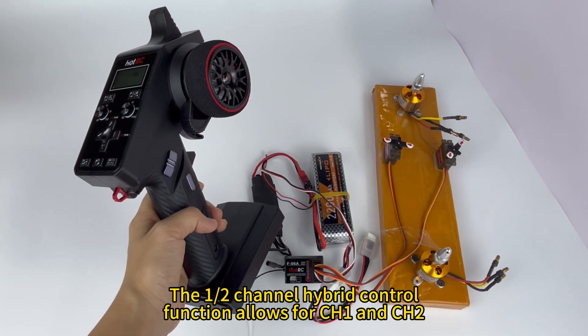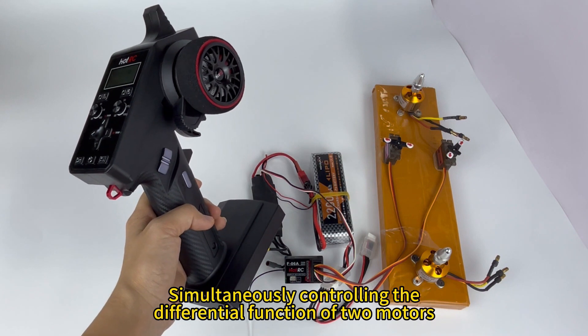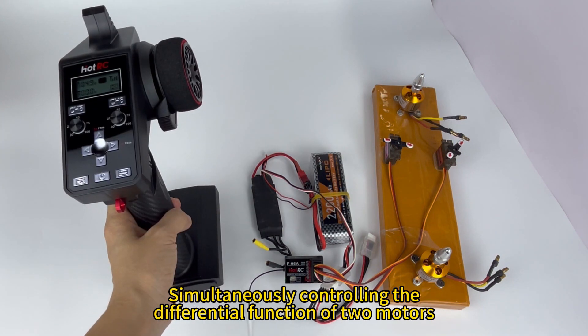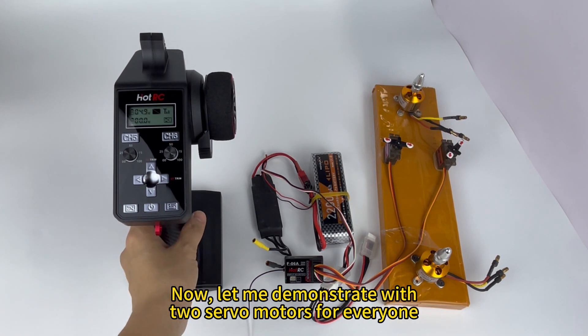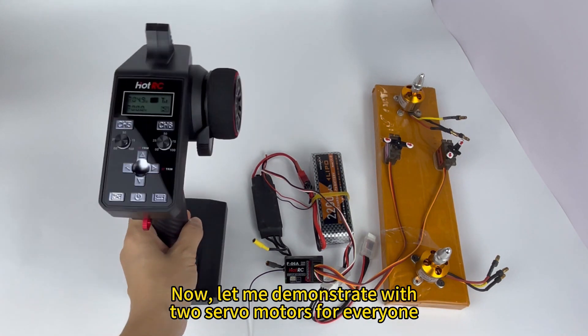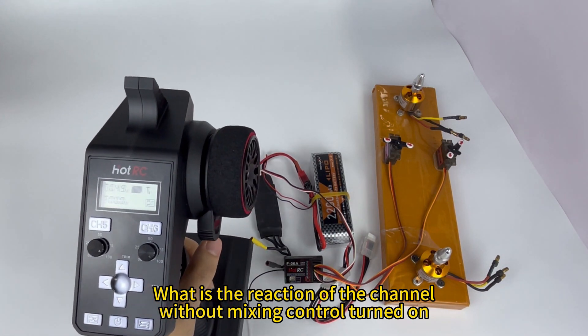The channel hybrid control function allows CH1 and CH2 to simultaneously control the differential function of two motors. Correct the code before operation. Now let me demonstrate with two servo motors what the reaction is when the channel mixing control is turned off.